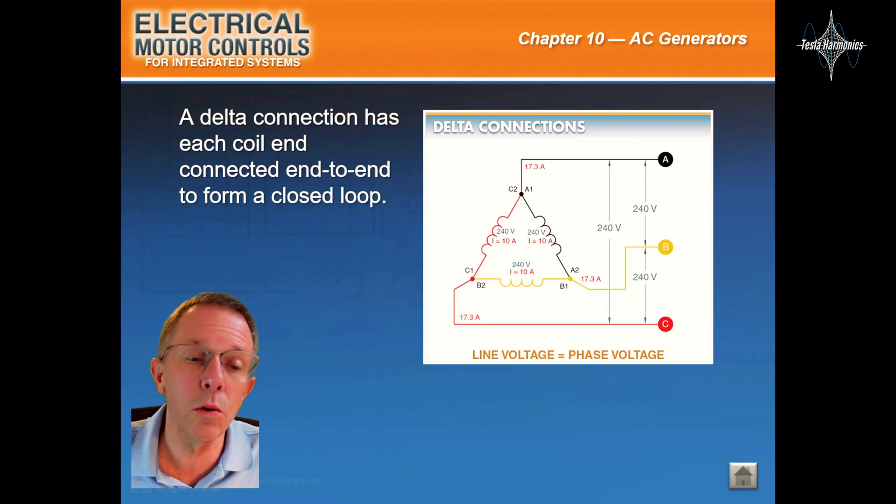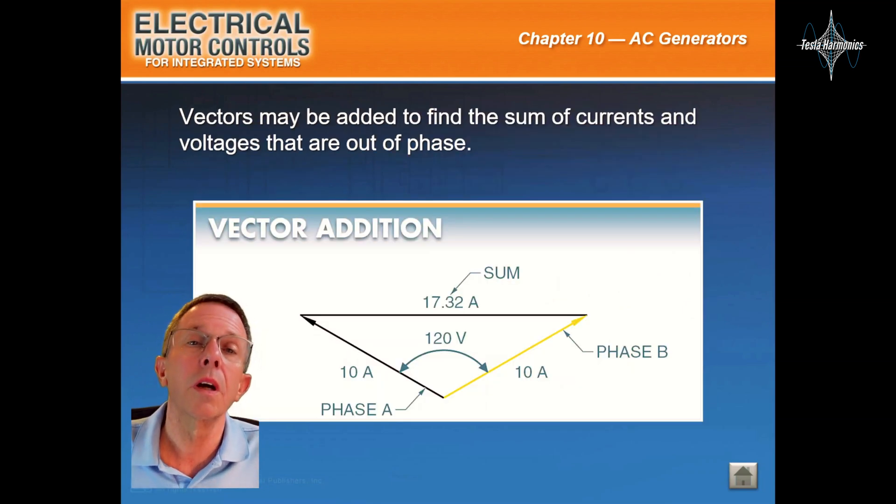A delta connection has each coil connected end to end to form a closed loop. Vectors may be added to find the sum of currents and voltages that are out of phase.